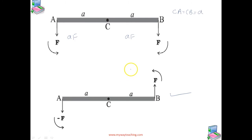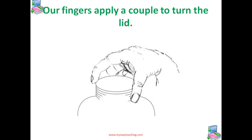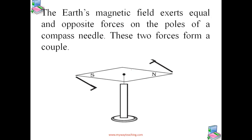A couple produces rotation without translation. When we open the lid of a bottle by turning it, our fingers are applying a couple to the lid. Another known example is a compass needle in the earth's magnetic field. The earth's magnetic field exerts equal and opposite forces on the north and south poles — the force on the north pole is towards the north and the force on the south pole is towards the south. Except when the needle points in the north-south direction, the two forces do not have the same line of action, so there is a couple acting on the needle due to the earth's magnetic field.